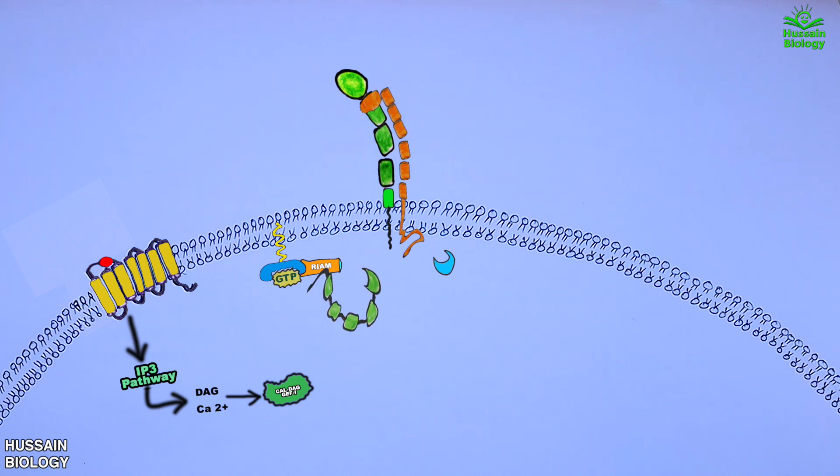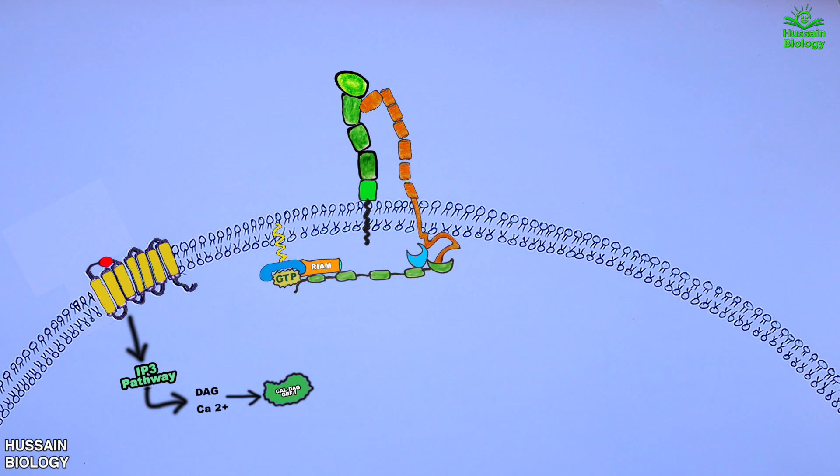Both these proteins bind and interact with the integrin beta chain to trigger the integrin activation. Here in this animation we can see the talin binds with the beta chain at its cytoplasmic domain, causing the tail reorientation, thus altering the molecular conformation of integrin molecule. And by this way we get the active open form of integrin molecule.